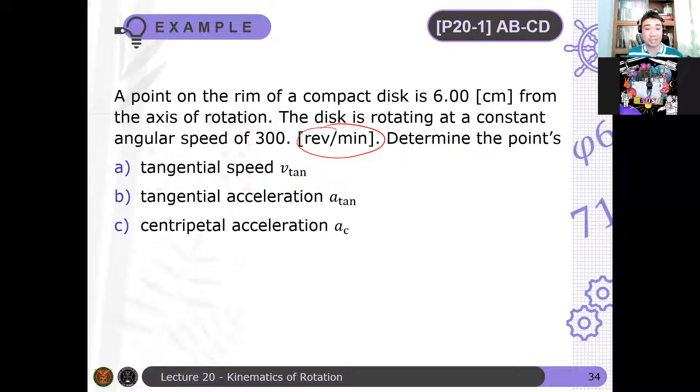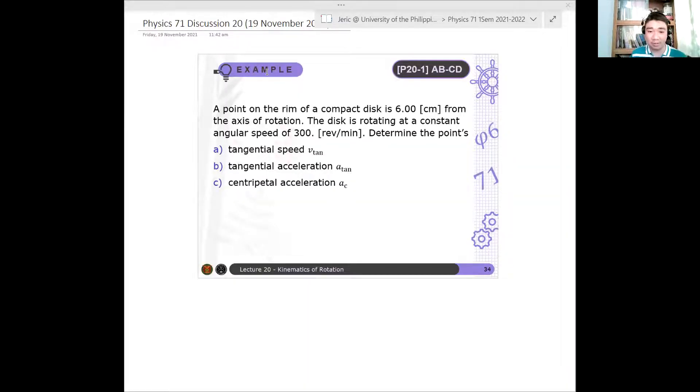We need to determine the point's tangential speed v_tan, tangential acceleration a_tan, and centripetal acceleration a_c, or a_rad actually. Okay, so I'll be giving you maybe a minute to solve this problem, then I'll show you the solution after. Okay, so two minutes have elapsed. Let's solve this problem.